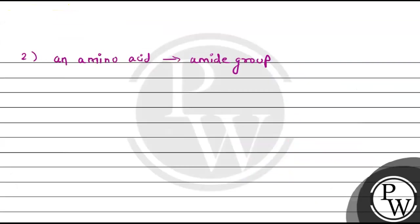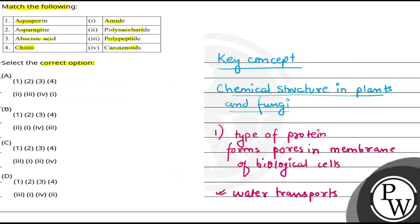Now, three is abscisic acid. If we talk about abscisic acid, we can say that it is a plant hormone which belongs to the class of carotenoids. Carotenoids is a class in which we get various substances including abscisic acid. This is the correct match.